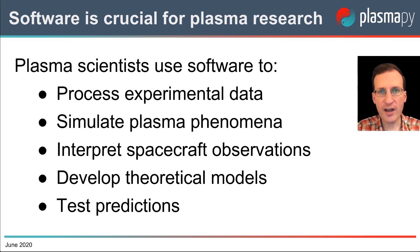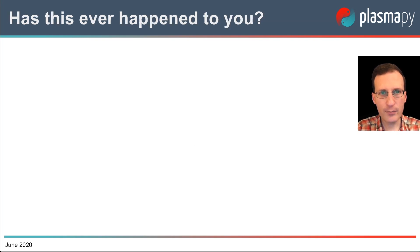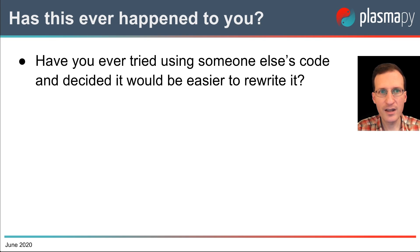Despite how vital software is to every aspect of our research, those of us in science tend not to use best practices from software engineering when writing code. This often leads to duplicated efforts, wasted time, and poor communication of ideas and information. For example, do any of these scenarios sound familiar to you for your own research? Have you ever tried using someone else's code or your own code from six months ago and decided it would be easier to just rewrite it from scratch?